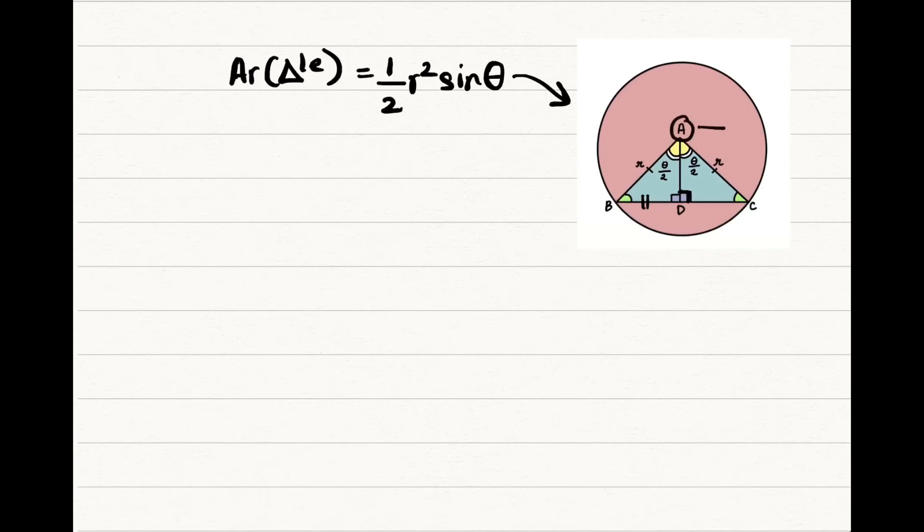A is the center, BC is the chord of the circle and AB is equal to AC which is equal to r, that is the radius of the circle.